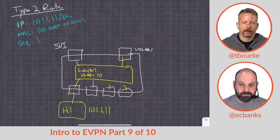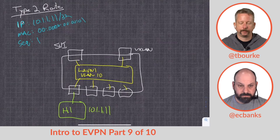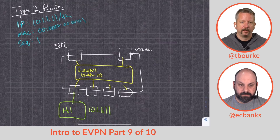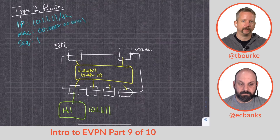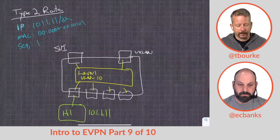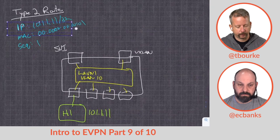So when the leaf learns about an endpoint, it notes its MAC address and IP address. There may be cases where there's no IP address and it's purely MAC-based, but most of the time we learn both MAC and IP. We generate a Type 2 route with both the IP and MAC in it, which gets sent out to whatever peers we have and distributed via EBGP or IBGP.